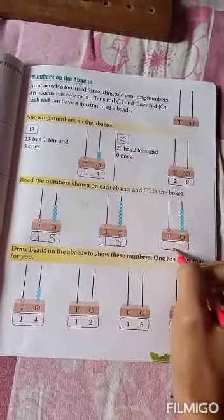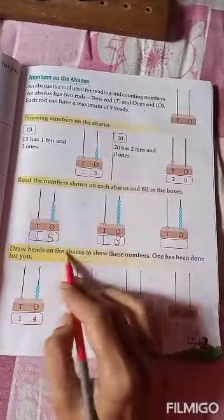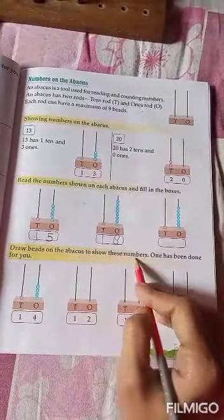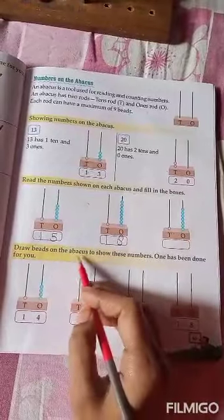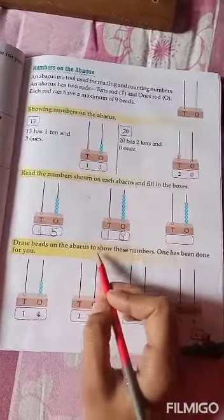Next, you have to do this yourself. Now, draw beads on the abacus to show these numbers. 1 has been done for you. In this, you have to draw the beads.